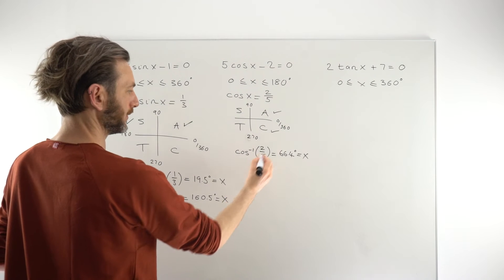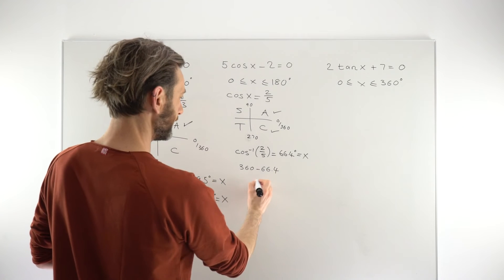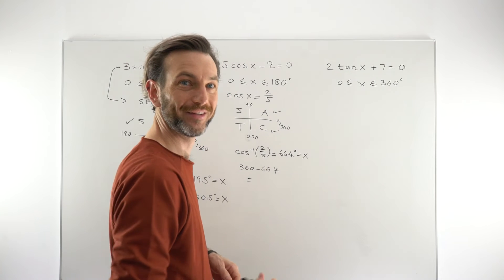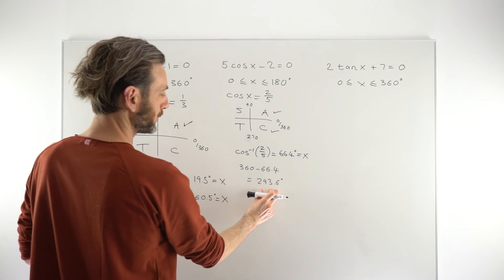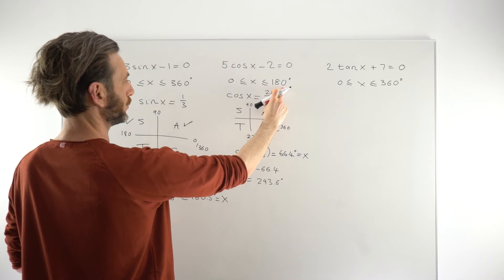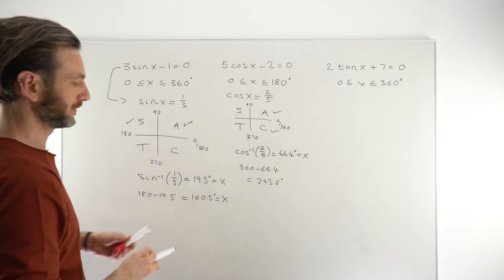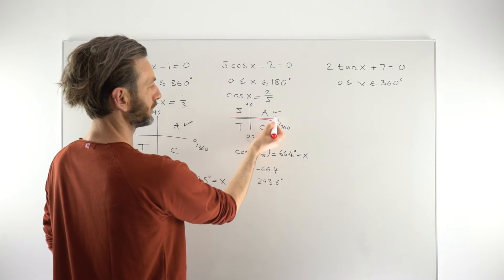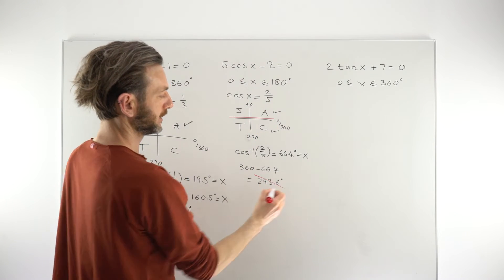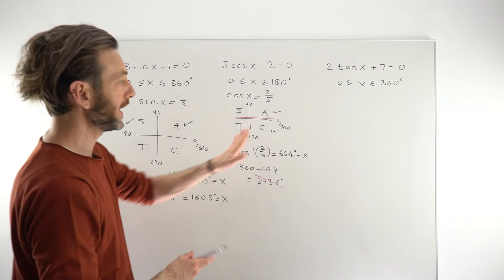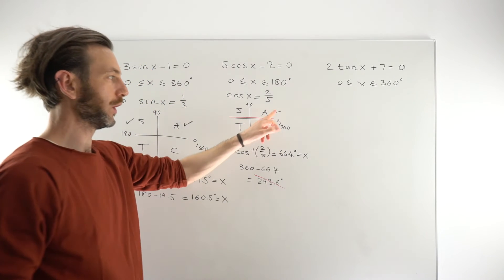For the fourth quadrant solution, we do 360 minus 66.4, which gives 293.6 degrees. However, our range of values only ran to 180 degrees. That means we're only looking at the top half — the first two quadrants on the CAST diagram. So although 293.6 would be a valid solution to the equation, it's not valid for this range of values, and we discard it. This illustrates why the CAST diagram is important in conjunction with the given range.